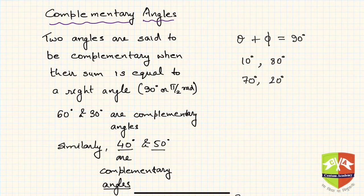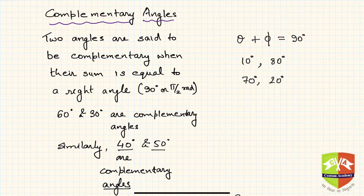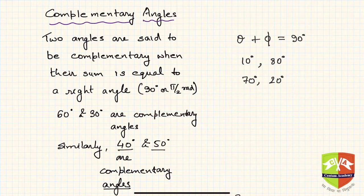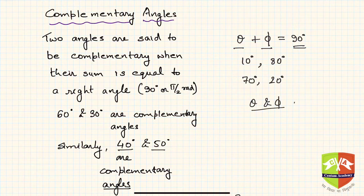Welcome to another session on trigonometry. Today we are going to understand complementary angles and the relation between various t-ratios of complementary angles. Two angles are said to be complementary when their sum is equal to a right angle — that is, if two angles theta and phi have a sum of 90 degrees, then theta and phi are complementary to each other. This is very vital information.